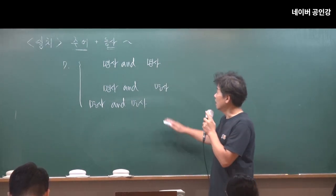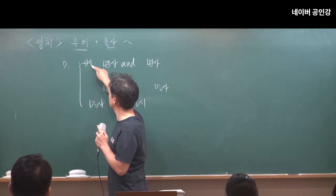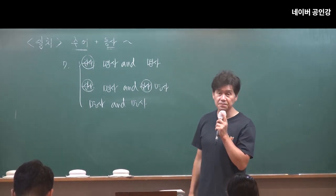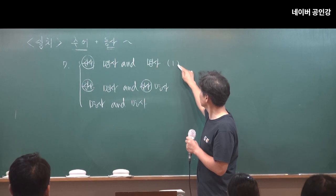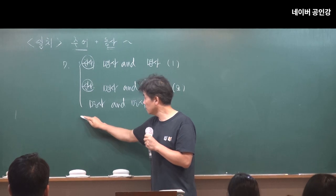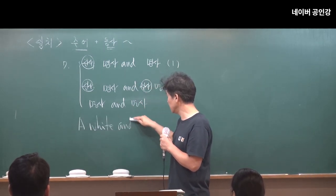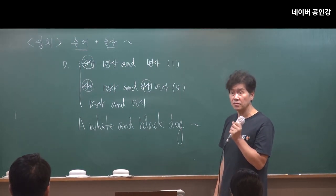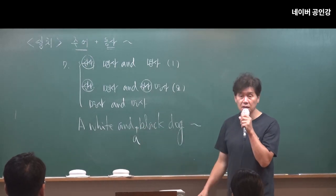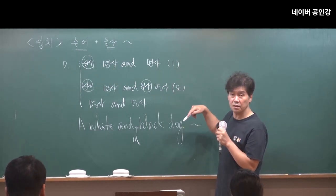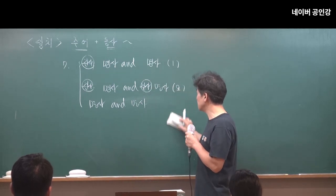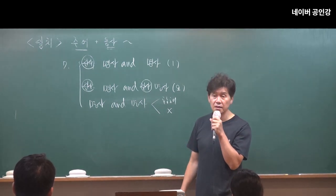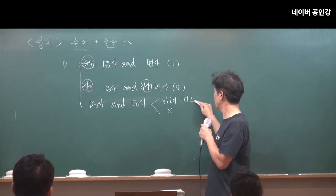명사인데 앞에 명사만 관사가 붙는 거예요. 또 양쪽에 관사가 붙는 거예요. 머리카드. 그럼 이거는 몇 개야? 하나. 이거는? 두 개. 이거 강아지 몇 마리야? 한 마리 — 바둑이. 이렇게 되면 강아지 몇 마리? 이건 두 마리. 이건 뭐 문제 되지 않을 것 같아, 그치? 근데 양쪽에 관사가 다 안 붙는 거야. 그러면 이 두 명사가 합해지는 건지, 합해지지 않는 건지 보고 해야 돼.